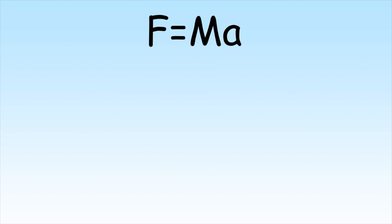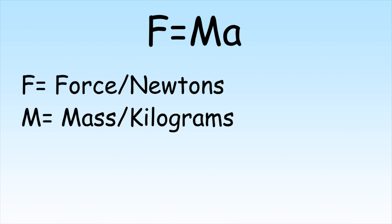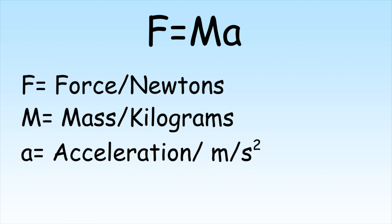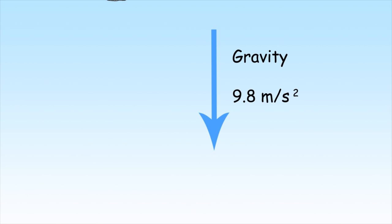F equals MA is the formula used in physics to determine the strength of a force. F stands for force and is measured in newtons. M stands for mass and is measured in kilograms and A stands for acceleration and is measured in meters per second squared. In the case of Hooke's Law, the acceleration will be gravity, 9.8 meters per second squared.